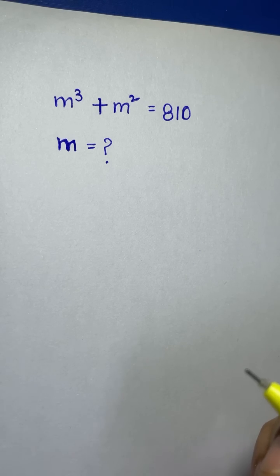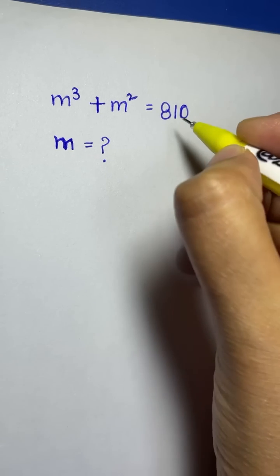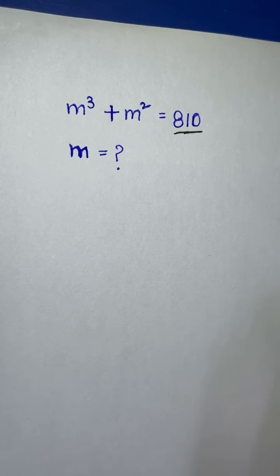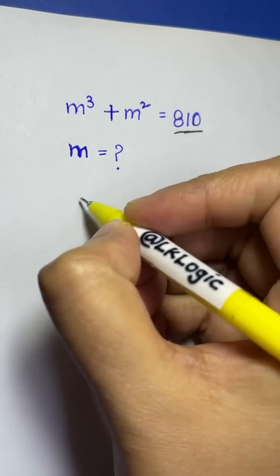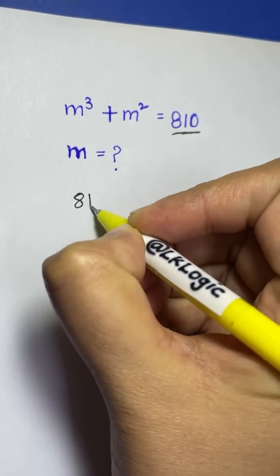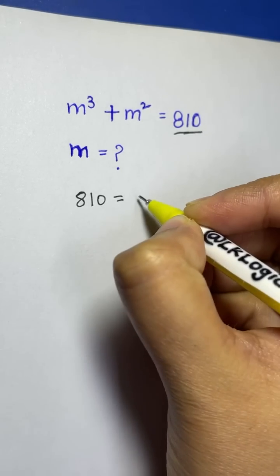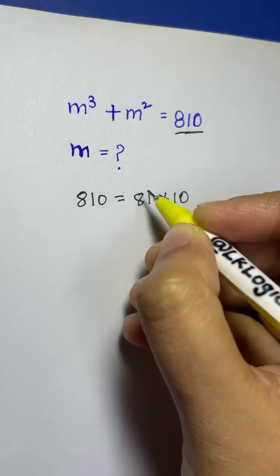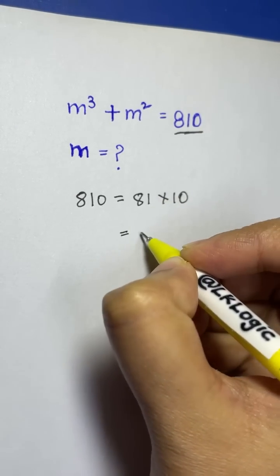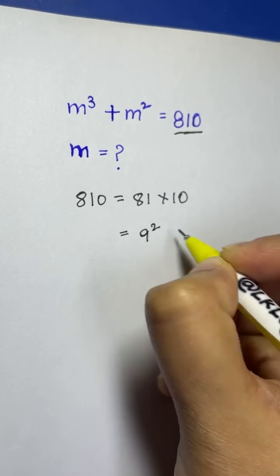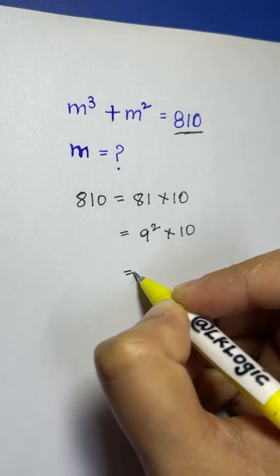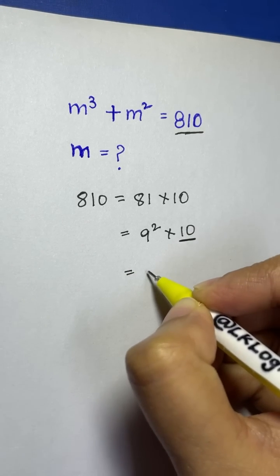The first thing we are going to do is find the factors of 810. Taking the LCM, 810 can be written as 81 times 10. And 81 can be split up into 9 times 9, that's 9 squared. So you can write it as 9 squared times 10.